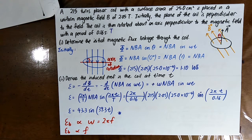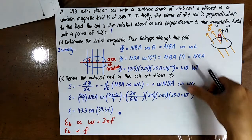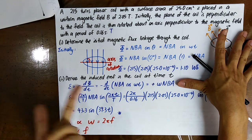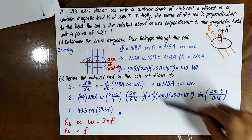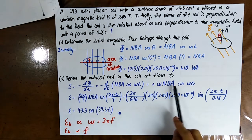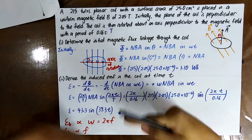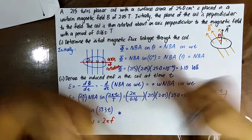For the sine function, the maximum value is 1 and the minimum value is −1. When considering the magnitude of the back EMF, we ignore the sine function because we already know its range. The magnitude is just ωNBA. The back EMF is directly proportional to ω, which is directly proportional to the frequency of rotation. So if you want a larger induced EMF, just rotate the coil faster.